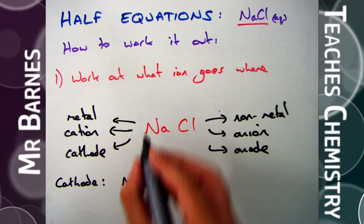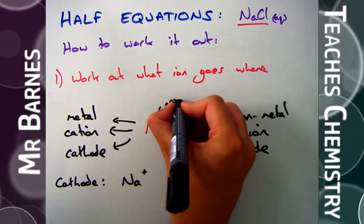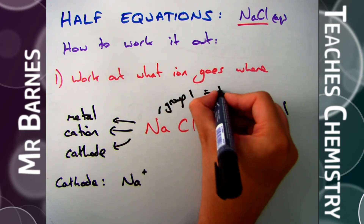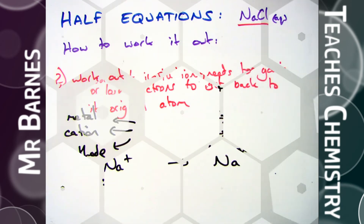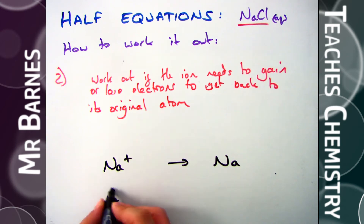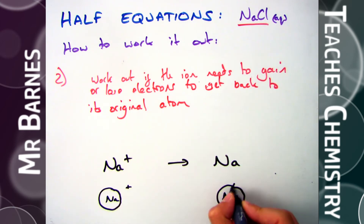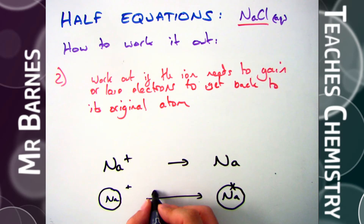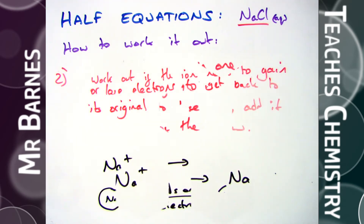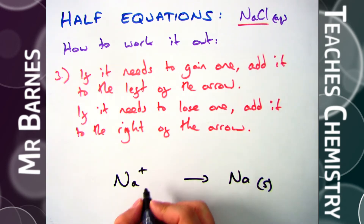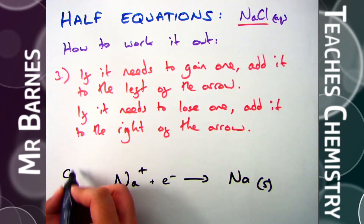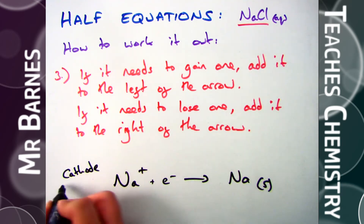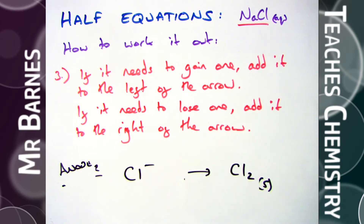Cations are positive, so sodium, which is in group one, loses one electron and becomes Na⁺. You know it's going to go back to the metal, so it goes back to Na. The next step is to work out whether the ion needs to gain or lose electrons to get back to its original atom. Sodium in group one has lost one electron, therefore it needs to gain one back. If it needs to gain, add the electron to the left of the arrow — so it's Na⁺ + e⁻ → Na.